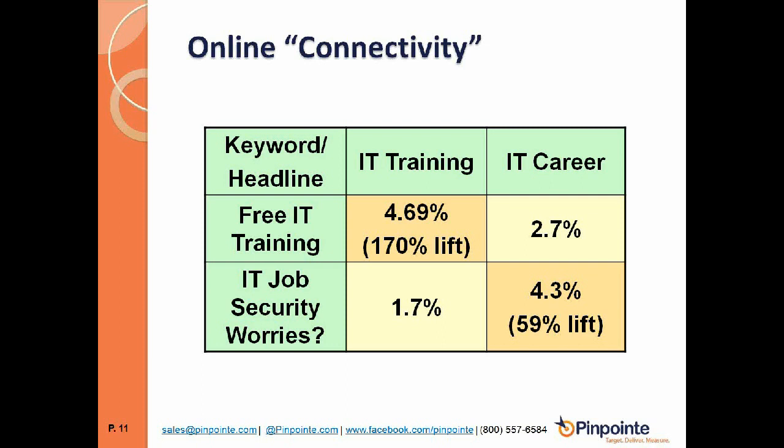For example, with the keyword 'IT training' versus 'IT career,' we ran an ad that said 'Free IT Training.' For the keyword 'IT career,' the click-through rate was 2.7%. But for 'IT training,' it was 4.7% — a 170% lift. Why? Because the keyword 'IT training' appears directly in the ad headline. This principle works from keyword to ad, and also from the traffic source to the landing page. The landing page should reflect the marketing that brought traffic there.